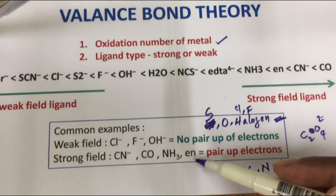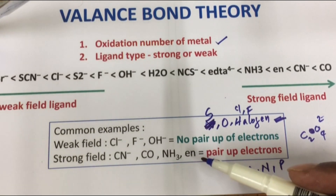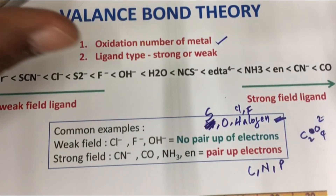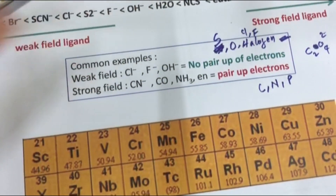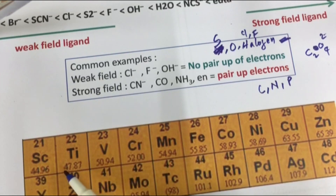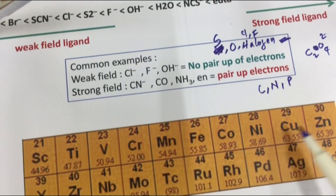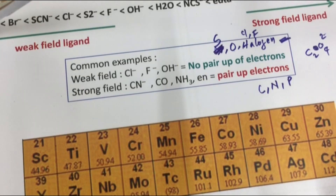Ethylenediamine has nitrogen as its donor atom, so it is considered a strong field ligand. These concepts apply to 3D transition metals.